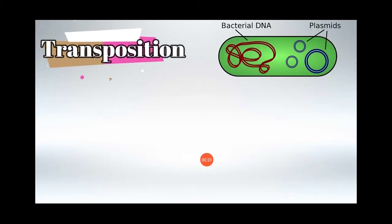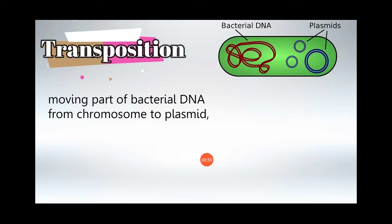Transposition involves bacteria's genetic material, DNA and plasmid. The bacterial DNA material is called plasmid. This is called transposition: the moving part of the bacterial DNA from the chromosome to plasmid and vice versa.